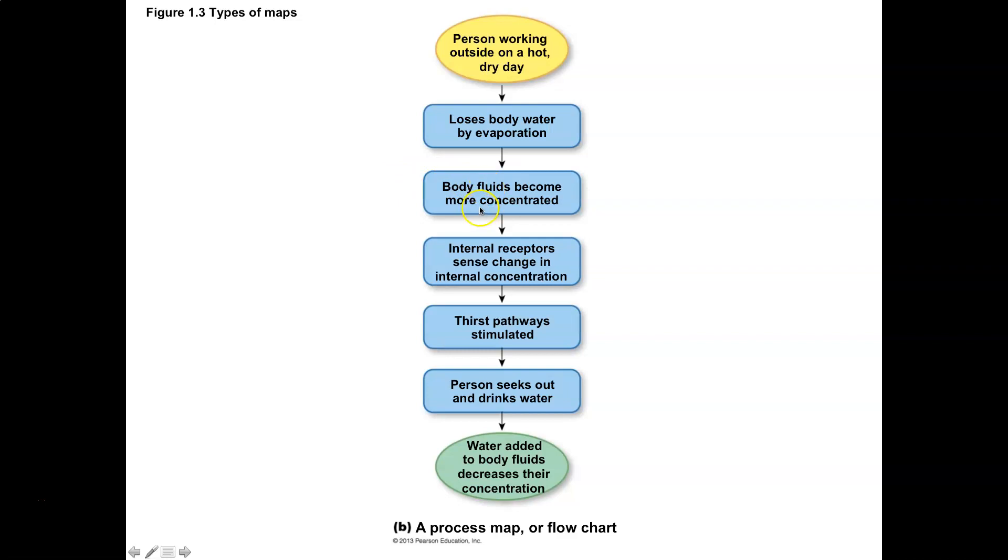But if you're losing water, you're going to have to consume fluids. If there's an output, then there has to be an input in order to maintain a homeostatic balance. This flow diagram represents the process - you lose water through evaporation, body fluids become concentrated, signaling for thirst occurs, you drink water to increase water content, and that gets back to maintaining homeostasis.